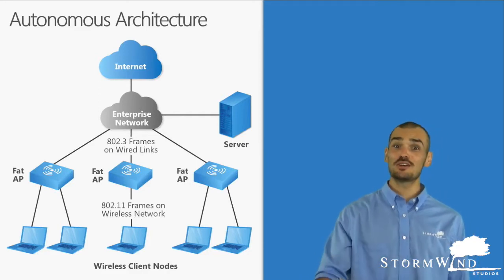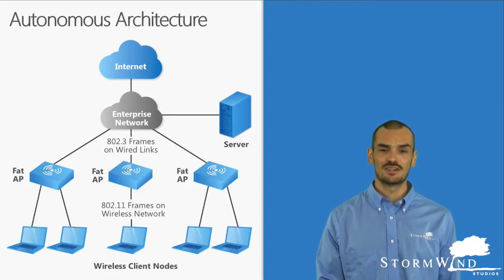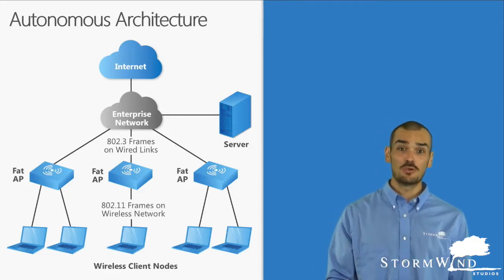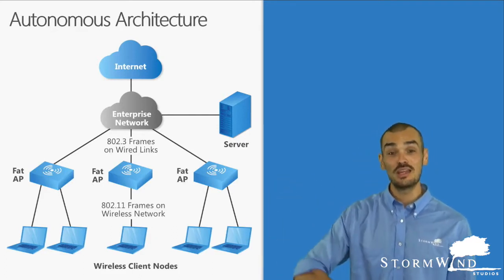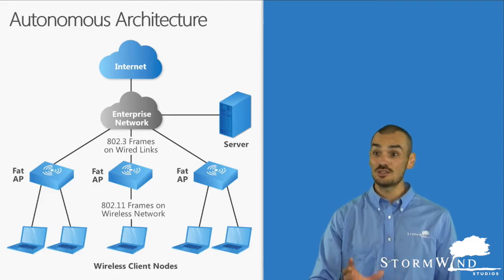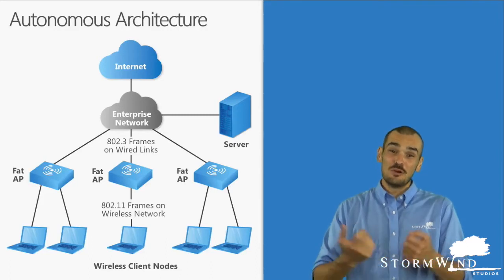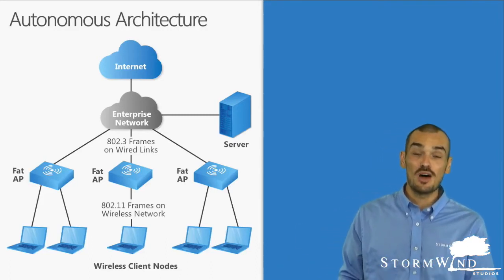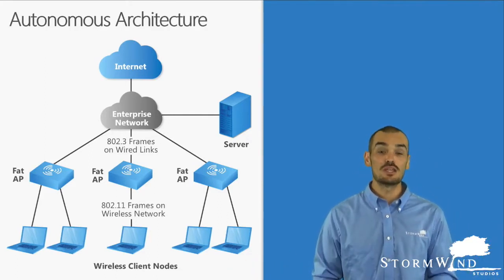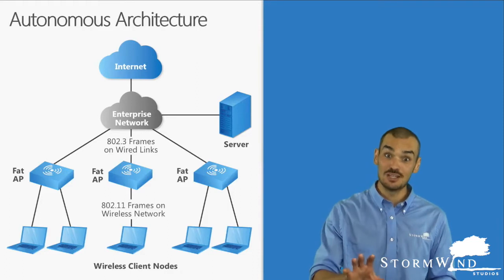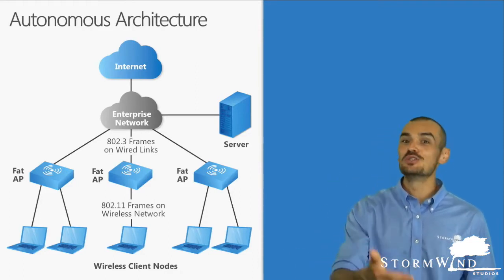If you've heard the cliché 'too many cooks in the kitchen,' that's kind of what you're going to run into with these autonomous access points. They are fully self-contained and will do their own thing. There's no coordination with their radio settings, so these autonomous access points could actually bounce up against each other — a situation we definitely don't want. But if we've only got one, two, or even five of them, the autonomous architecture can be a perfect scenario. You can manage them — you just have to manage them individually.